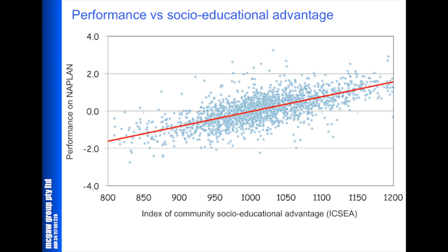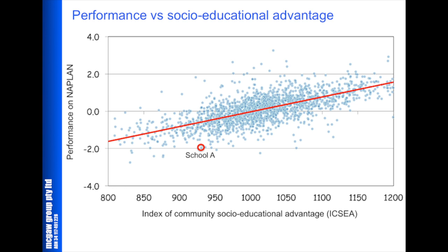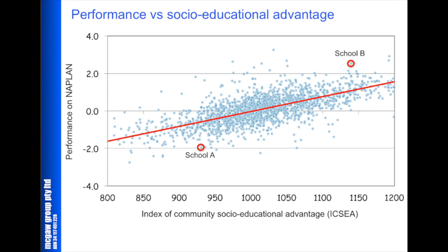Not all schools are on the line. Some do better than you'd expect given the ICSEA for their students; some do less well than you'd expect. School A, for example, is a school doing less well than you'd expect, even given the relatively low level of its students' index. And School B is a school that does much better than you'd expect, even given the advantage level of its students.